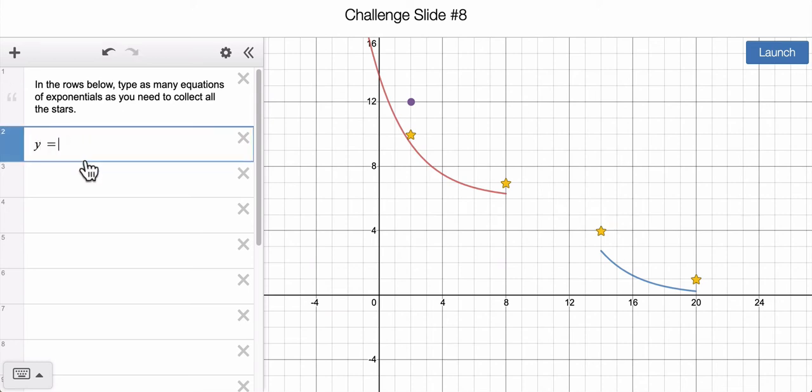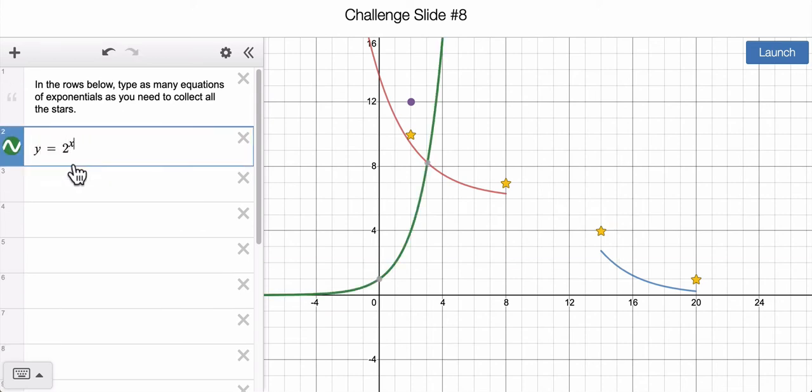There's some randomness in there and the way the marbles distribute, but you can get this. Start with your parent function y equals 2 to the x. Think about how to make, how to change or transform this function to turn it into the other ones you see here.